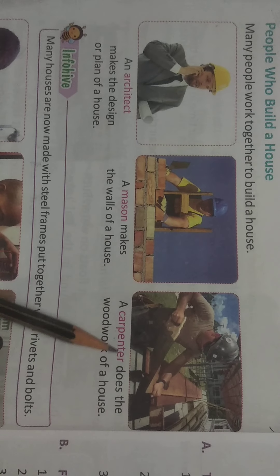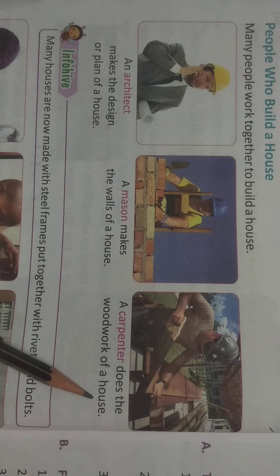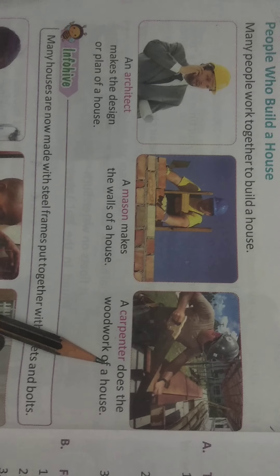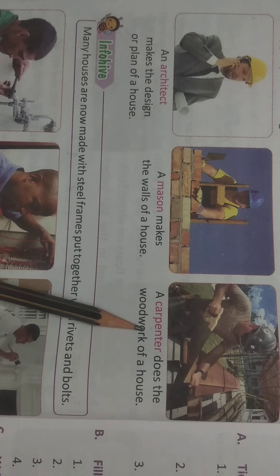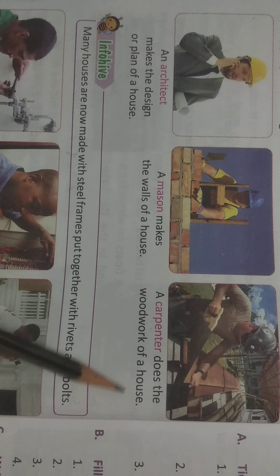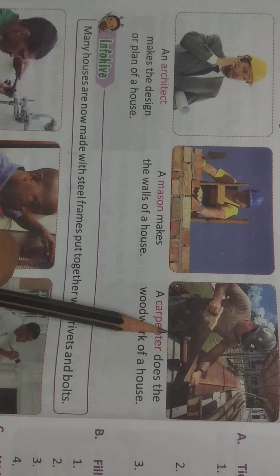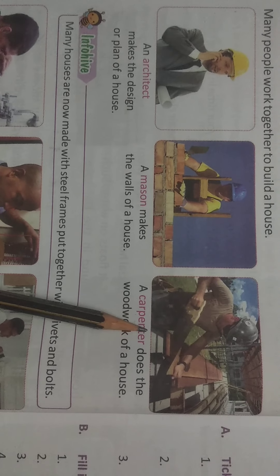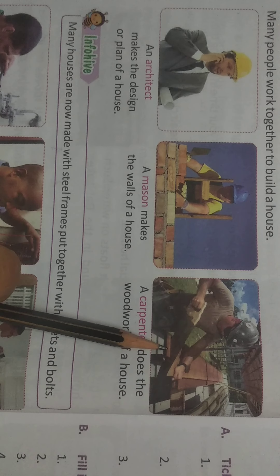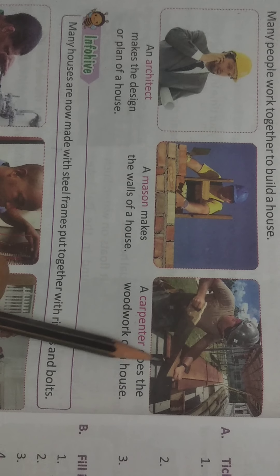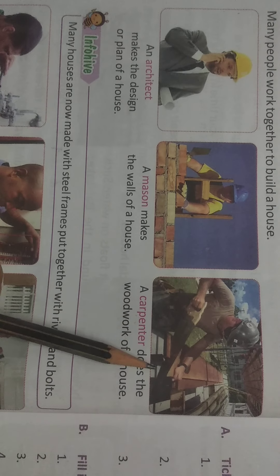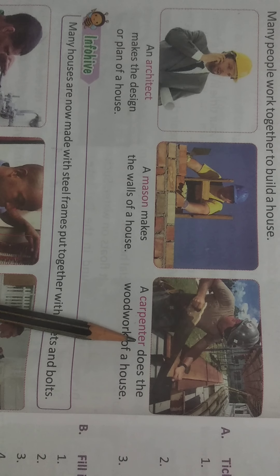A carpenter does the wood work of a house. He is the third important person. When building a house, doors and windows are needed, so the carpenter makes those doors and windows.